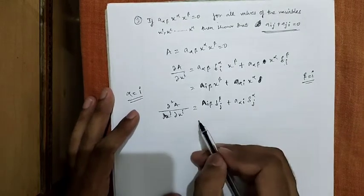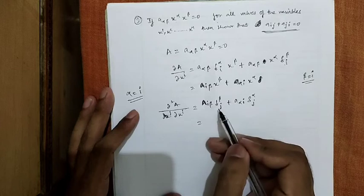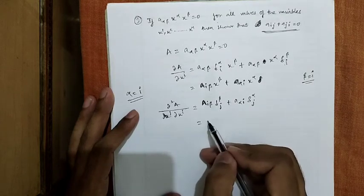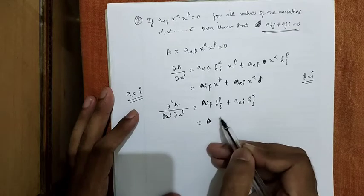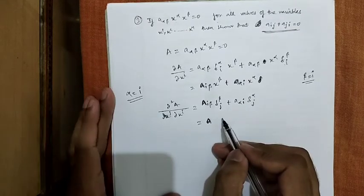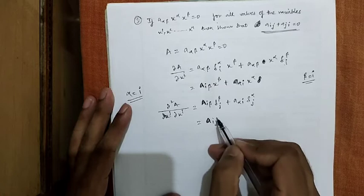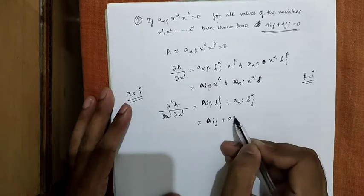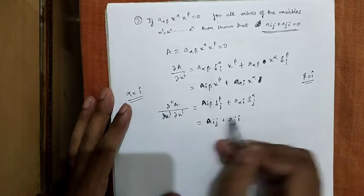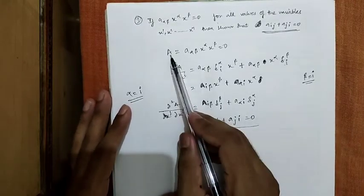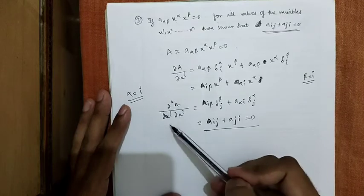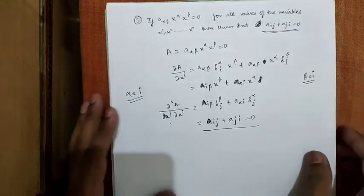Now, when alpha equals to j and beta equals to j, our equation will be converted into A_ij plus A_ji, which is all equals to 0. As A equals 0, its differentiation and the second differentiation also equal 0.